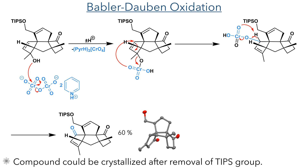In the next step, a Babler-Dobin oxidation was carried out on the newly produced tertiary hydroxyl group. Once again, PDC was employed, and this was attacked by the hydroxyl group, eliminating dipyridinium chromate to produce a chromate ester. This can undergo an intramolecular rearrangement, with the oxygen adding to the beta position, triggering the elimination of the chromate group. An intramolecular hydrogen abstraction then occurs, forming the ketone in a 60% yield.